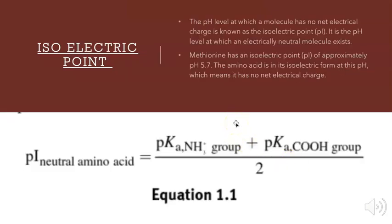For the isoelectric points: the isoelectric point is essentially the pH level at which a molecule has no net electrical charge and it is also the pH level at which an electrically neutral molecule exists. For methionine specifically it has an isoelectric point of approximately a pH of 5.7 which is acidic, and the amino acid exists in the isoelectric form at this pH, which means that it has no electrical charge. Down below there is a picture provided on how to calculate the isoelectric point of an amino acid.